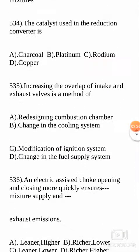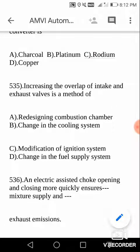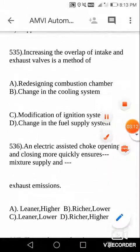Next question: The catalyst used in the reduction converter - options include radium, plutonium, rhodium, platinum. The answer is rhodium. Rhodium is the catalyst used in the reduction converter. Elements like radium, rhodium, and platinum are used as catalysts in converters.